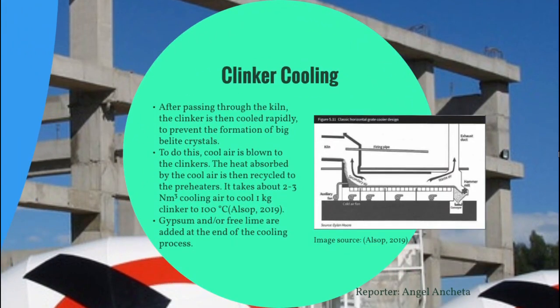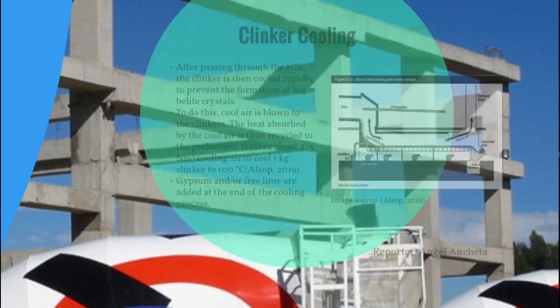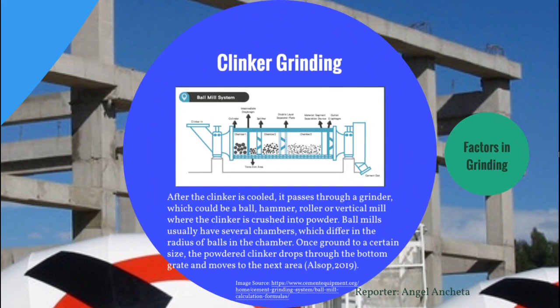After passing through the kiln, the clinker is cooled rapidly to prevent the formation of belite crystals, which affects alite formation. Cool air is blown to the clinkers, heat is absorbed, and the warm air is recycled to the preheaters. It takes about 2 to 3 cubic meters of cooling air to cool 1 kilogram of clinker to 100 degrees Celsius (under normal conditions). Gypsum and free lime are then added at the end of the cooling process. After cooling, the clinker passes through a grinder — which could be a ball, hammer, roller, or vertical mill — where it is crushed into powder. Since ball mills are the most prevalent, ball mills will be discussed.